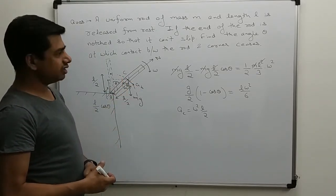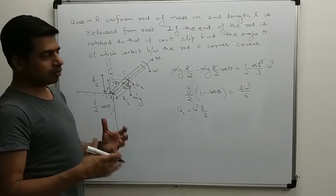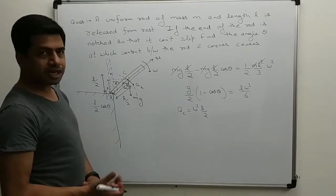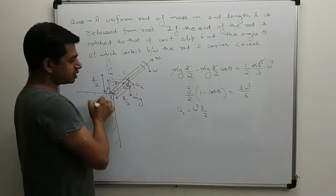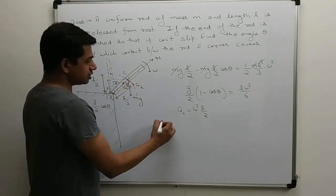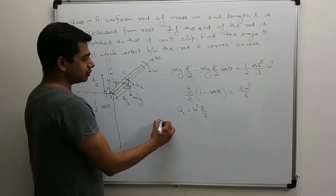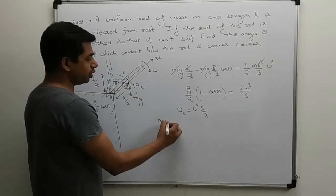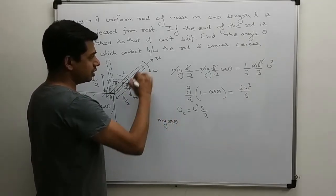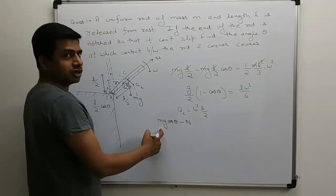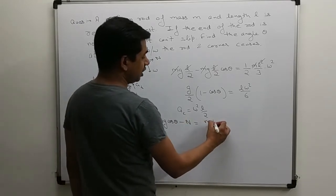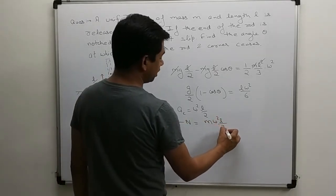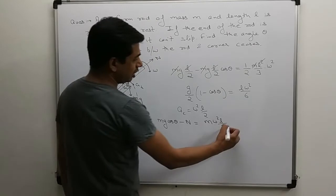Net force towards center is equal to M into centripetal acceleration, which is omega square l by 2. Net force towards center will be mg's component, mg cos theta, and normal is acting here, so minus n. mg cos theta minus n is equal to mass into centripetal acceleration. Centripetal acceleration is omega square l by 2.